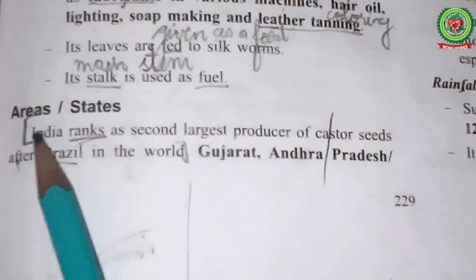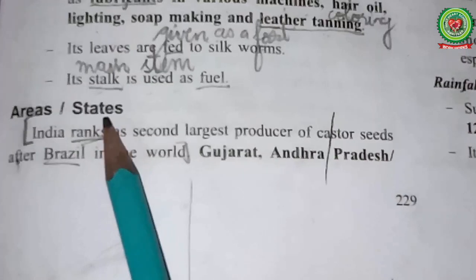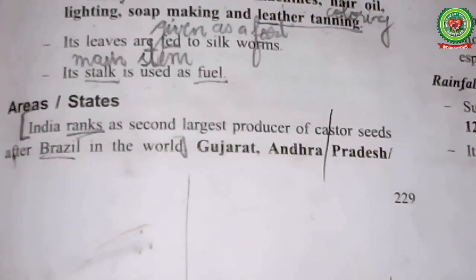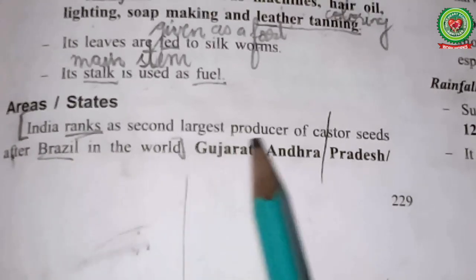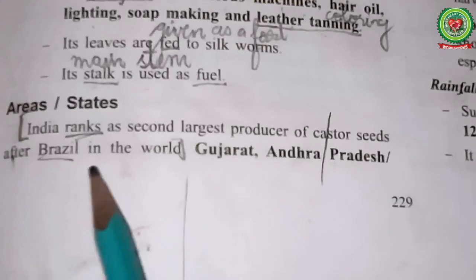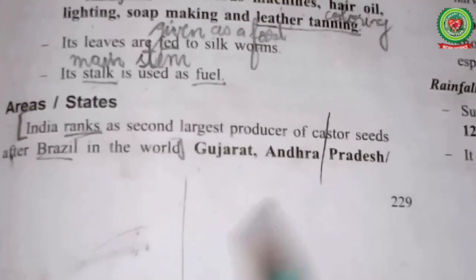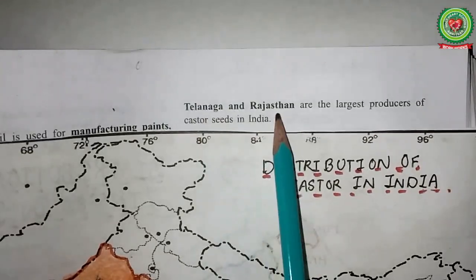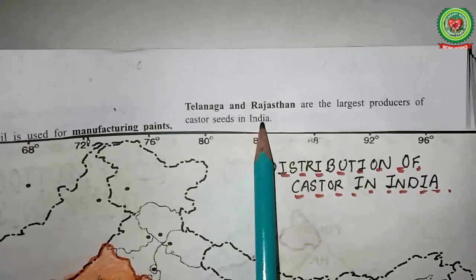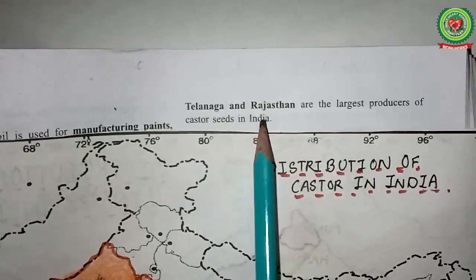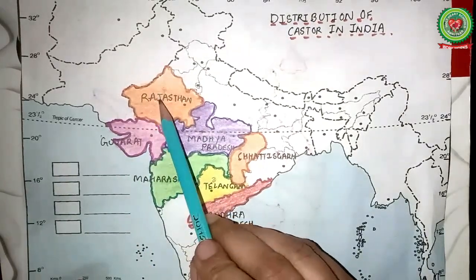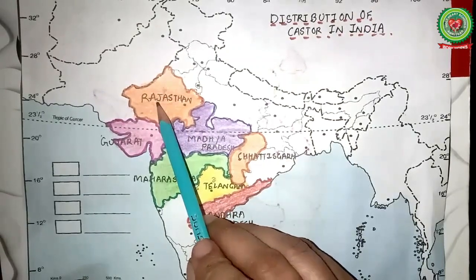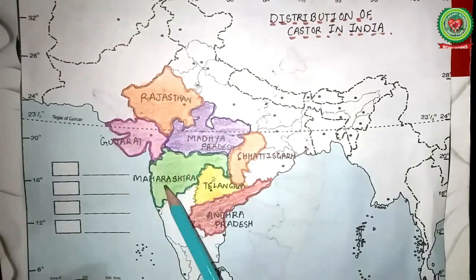Now let us read the area and states where castor seeds are grown in India. Castor seed production in India is around 9 to 10 lakh metric tons, and India ranks as the second largest producer of castor seeds after Brazil in the world. Gujarat, Andhra Pradesh, Telangana, and Rajasthan are the largest producers of castor seeds in India. Other producers are Madhya Pradesh, Maharashtra, and Chhattisgarh.